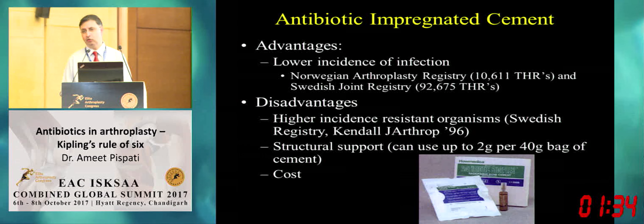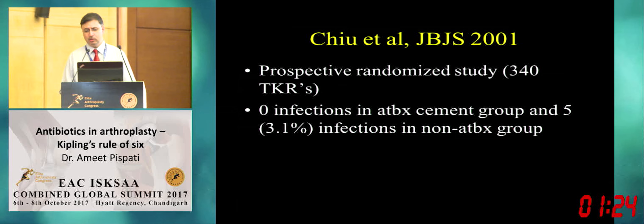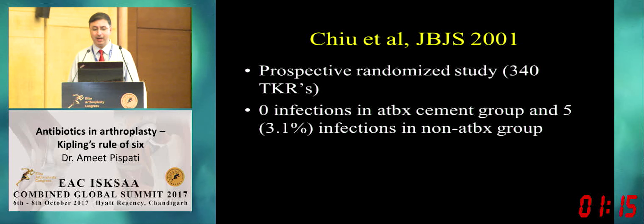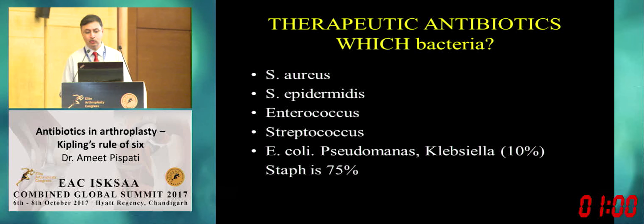A prospective controlled study done 17 years ago showed no infections in the antibiotic cement group versus the non-antibiotic cement group. If a patient has an infection, the antibiotic choice depends on the organism — most commonly Staph aureus or Staph epidermidis, but occasionally a fulminating E. coli infection. Treatment is as per culture sensitivity report, sent to a reliable lab. Do not start antibiotics until samples have been sent — there is 55% false negative if the patient has been on antibiotics.